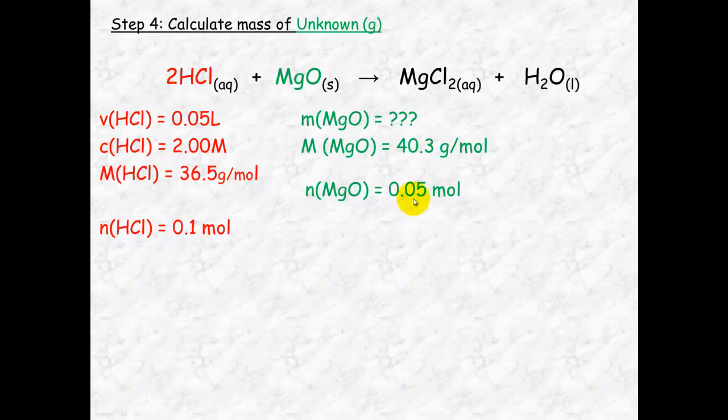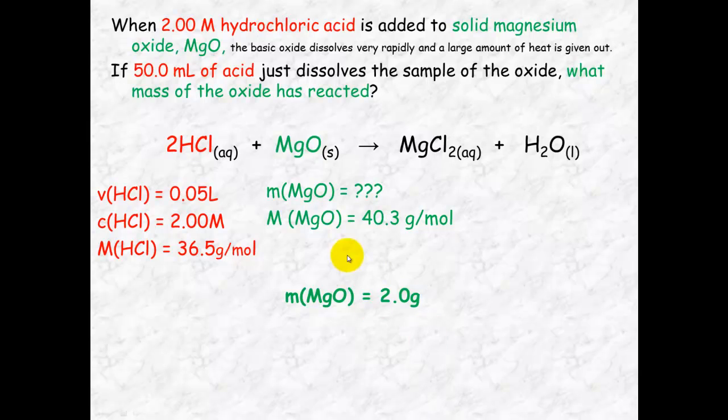I can use that 0.05 mole now. I've got the molar mass. So mass will equal number of mole times molar mass, which will equal 2 grams. Look back at my question and check that this is what I'm trying to find out. The mass of oxide, and I've calculated the mass of oxide.